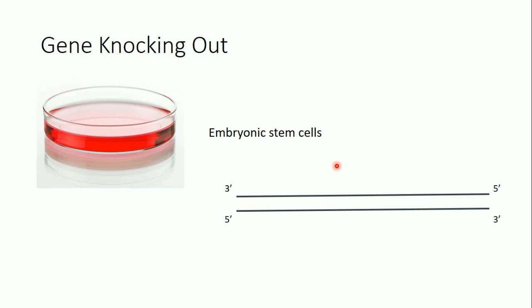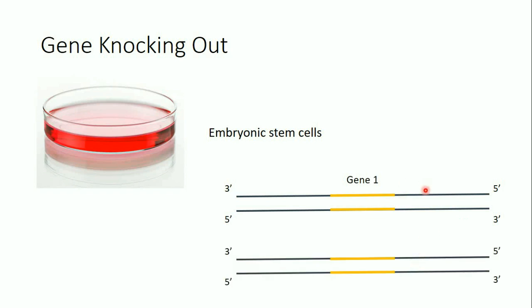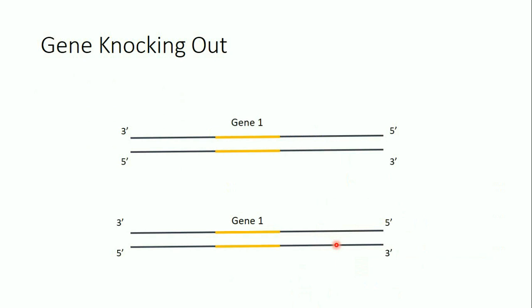Inside these cells, there is the mouse genome. Let's say this is the mouse DNA — 3' to 5' on one strand and 5' to 3' on the other. We have a specific gene, let's call it Gene 1, that we want to knock out, perhaps because it's causing a certain disease. You should know there will be another copy of this chromosome because the cell is diploid, with two copies of each chromosome.